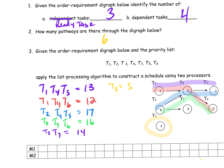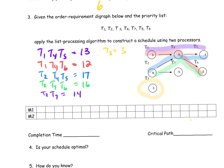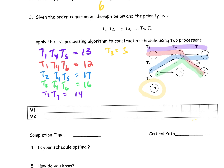Now I'm going to schedule this. This is my priority list right here. I'm going to schedule Task 1, Task 2, Task 3, Task 4, then Task 7, then Task 5, then Task 6. I'm going to put this project on the schedule — I've got two processors. So I'm going to put Task 1 on here first. Its completion time is 5, so that takes me out to 5.